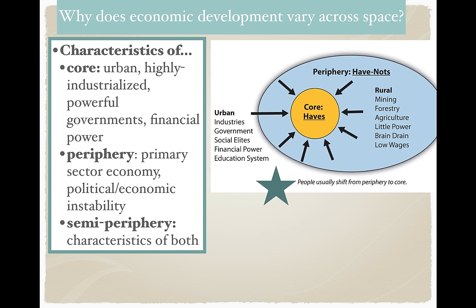The semi-periphery, which is not necessarily represented on the graphic here, refers to countries that have characteristics of both — some characteristics of a core country and some of a periphery country. This is where the term haves and have-nots applies: countries that have resources, power, and influence versus countries that do not.